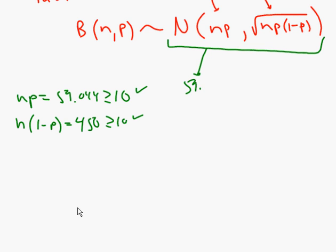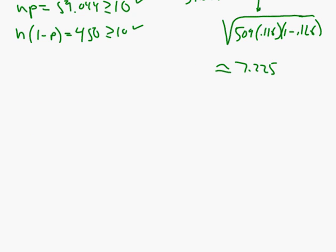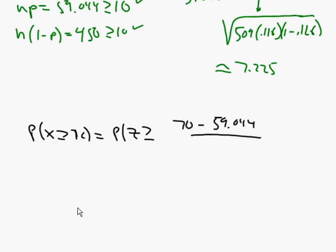n times p, we already said, is 59.044. Standard deviation you would get by doing square root of 509 times 0.116 times 1 minus 0.116. And you would get an answer of about 7.225. So now we can go ahead and rewrite our probability. Our probability we're interested in is probability x is greater than or equal to 70. But we can think of that as the probability that z is greater than or equal to 70 minus 59.044 over 7.225, which is the probability that z is greater than or equal to 1.516.